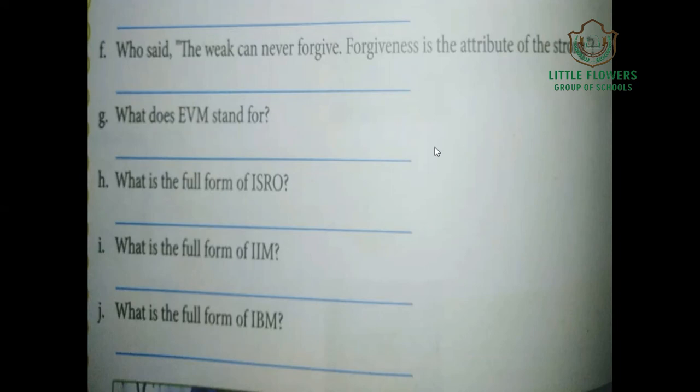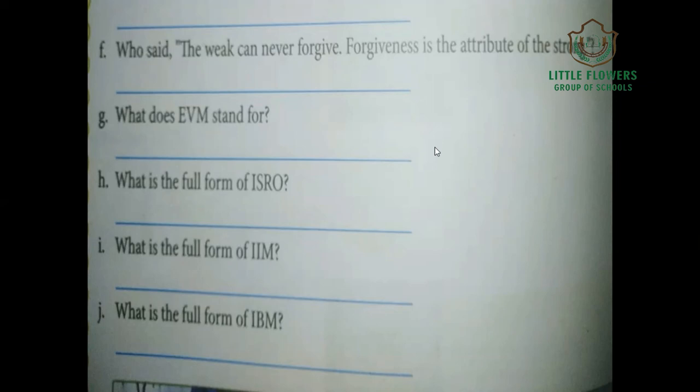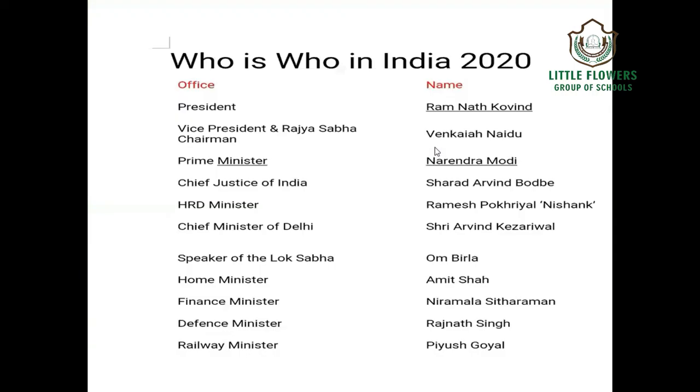What is the full form of ISRO? ISRO stands for Indian Space Research Organization. Dr. Vikram Sarabhai is considered the founding father of space programs in India. ISRO was formed on August 15, 1969. IIM stands for Indian Institute of Management. IBM stands for International Business Machines.